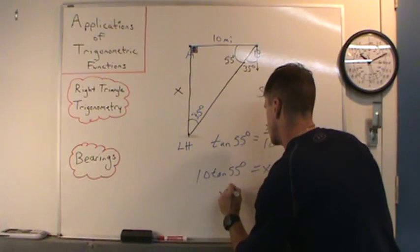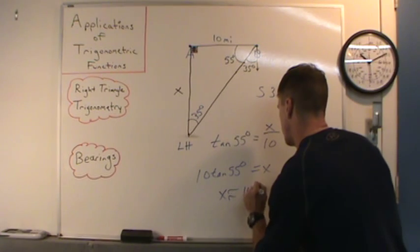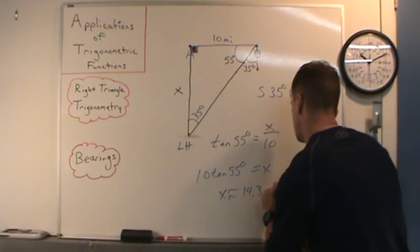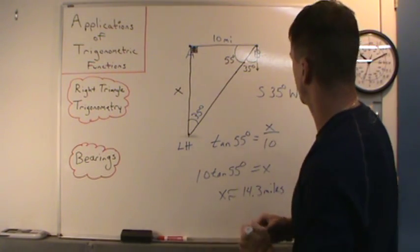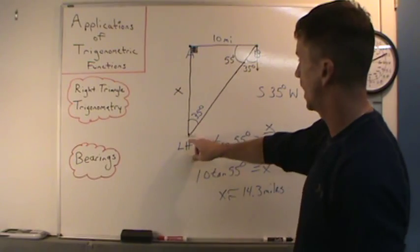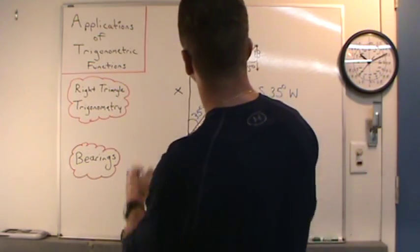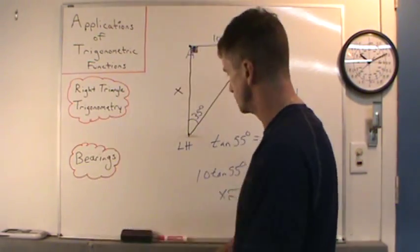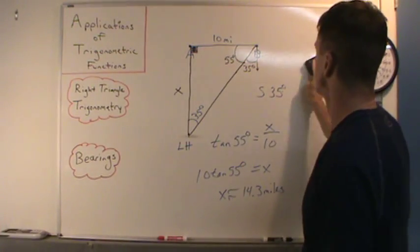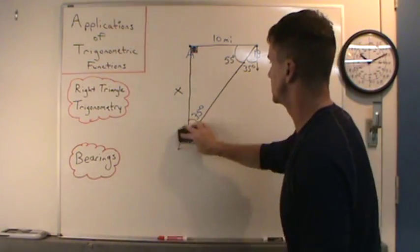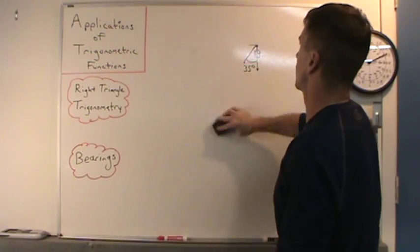So x is roughly 14.3 miles. Ship B is 14.3 miles from that lighthouse. Let's do one more application problem with bearings.